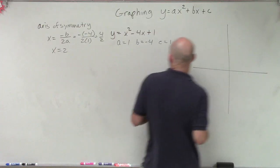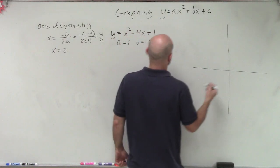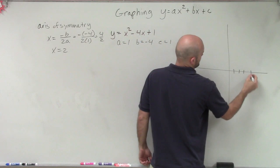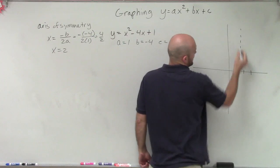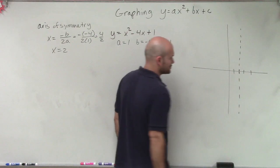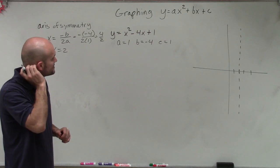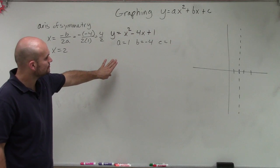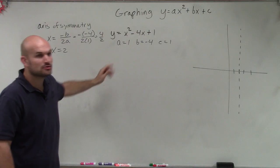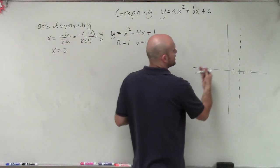Now to graph this, I'm going to plot my graph and go over to 2. I'm now going to make a dotted line, as this is now my axis of symmetry. So now we're going to choose our points, two points to the left and to the right.